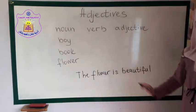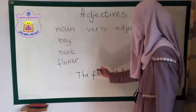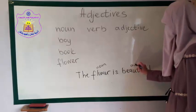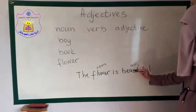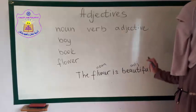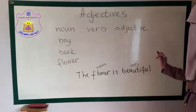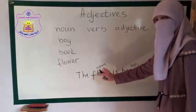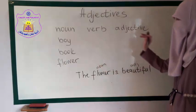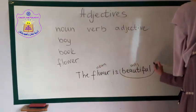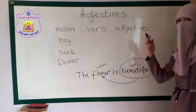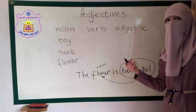Flower is a noun. Beautiful is an adjective. Beautiful describes the flower. So here we can see that 'flower' is a noun and 'beautiful' is an adjective that describes the noun — the flower. How is our flower? Our flower is beautiful.